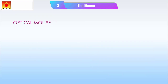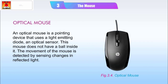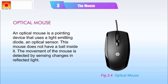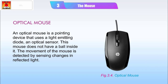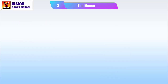Optical Mouse. An optical mouse is a pointing device that uses a light emitting diode and an optical sensor. This mouse does not have a ball inside it. The movement of the mouse is detected by sensing changes in reflected light.